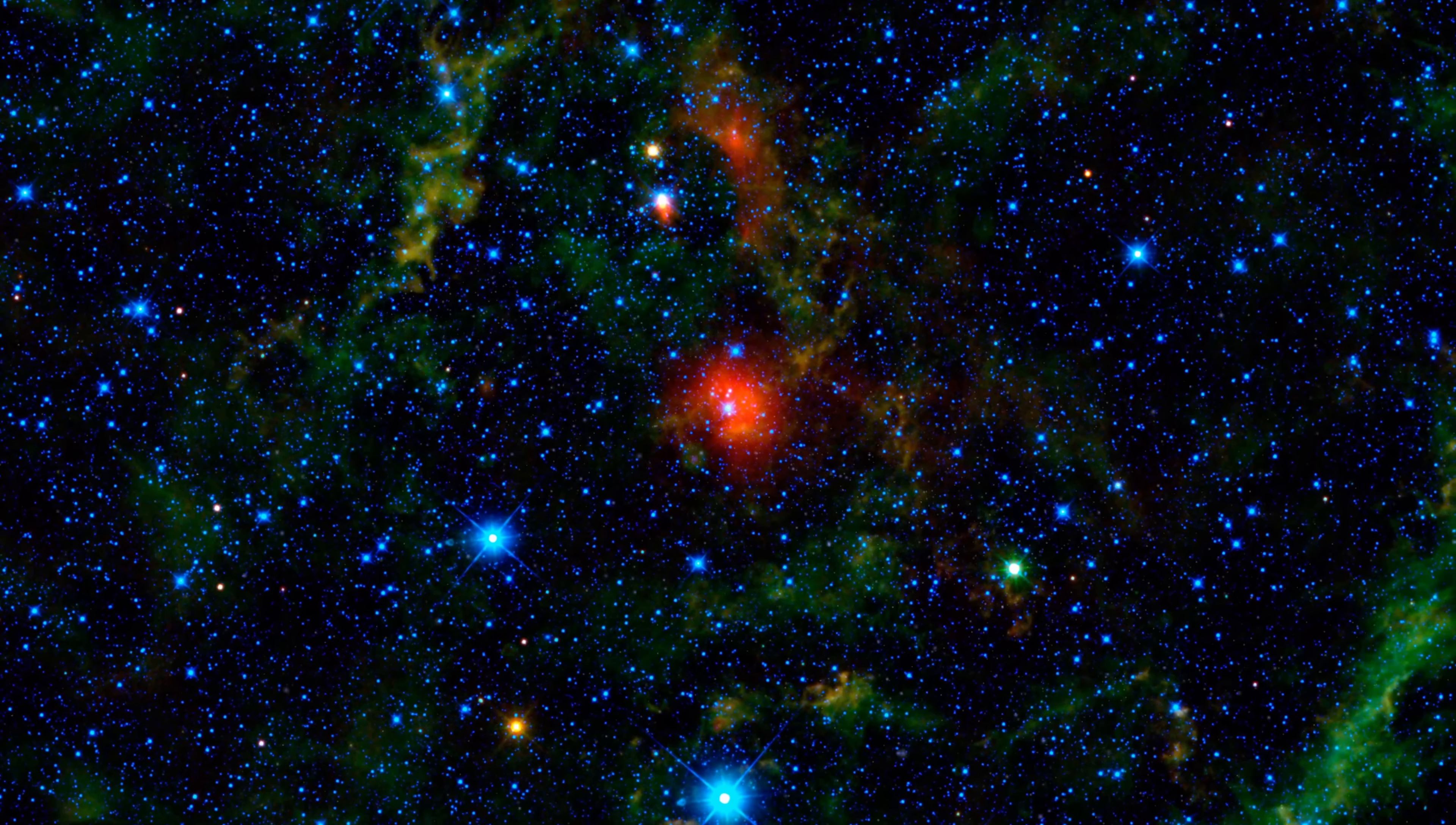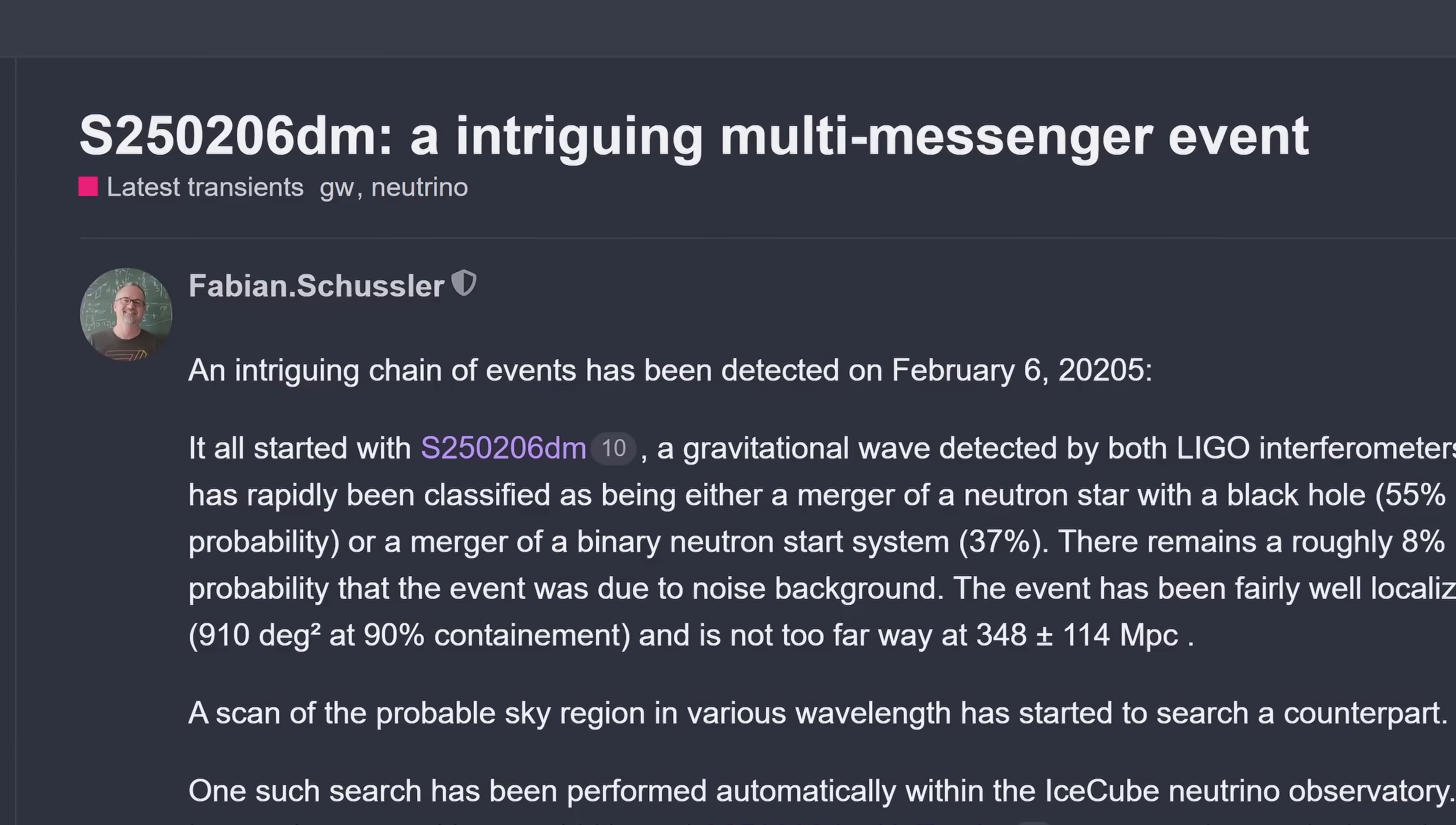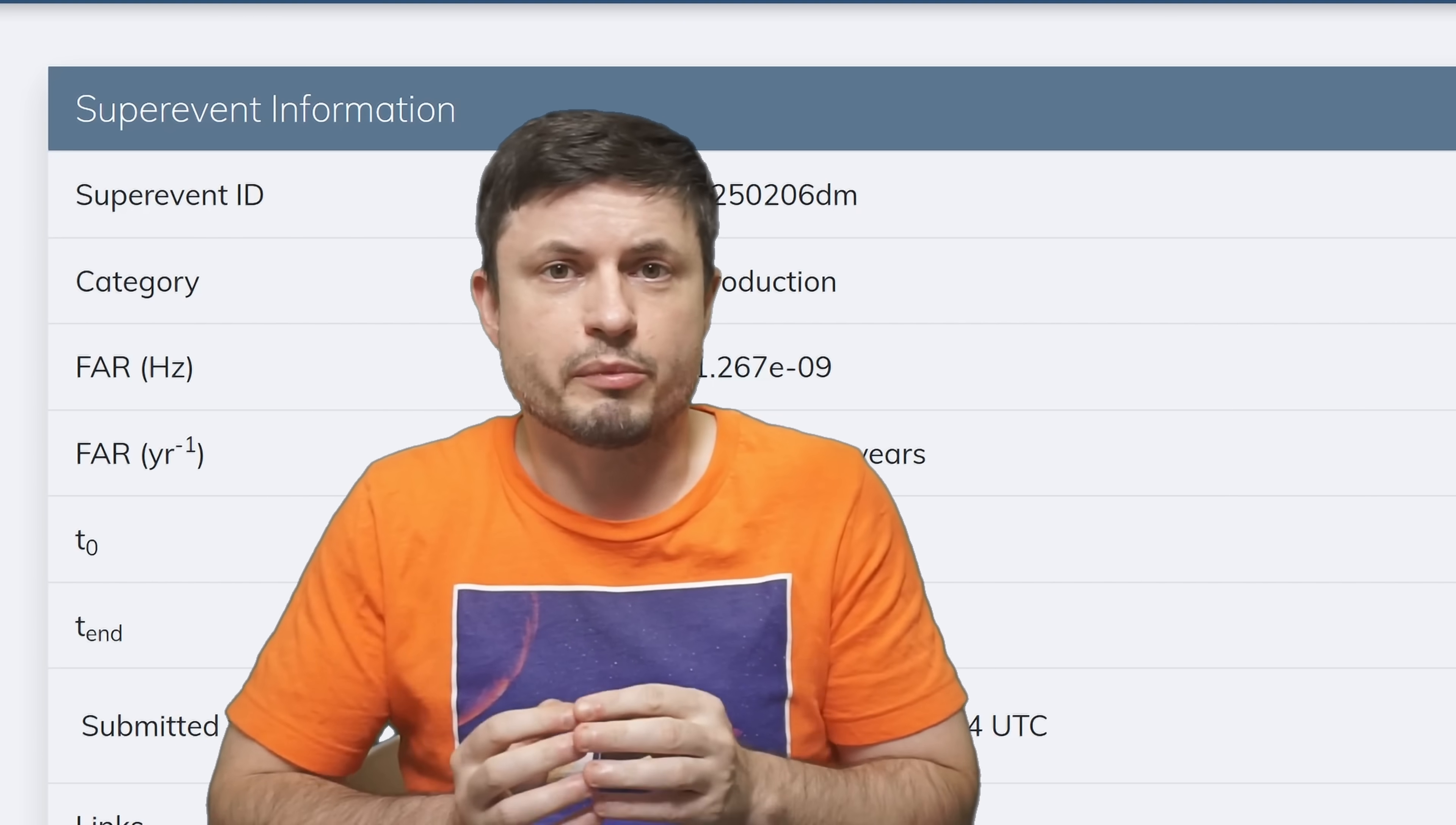But something very unusual happened on the 6th of February, 2025. Something nobody expected and something we still have trouble explaining. This was initially reported by Fabian Schussler on one of the astronomy forums. But you can also find the details in one of the links from the GRACE database. The database for various gravitational wave detectors. This is actually created automatically.